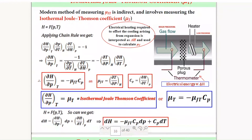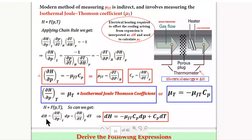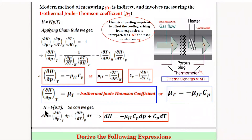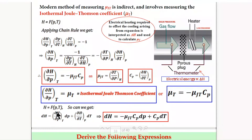We can write the total differential of enthalpy as: dH equals the isothermal Joule-Thompson coefficient times dP plus CP times dT. Substituting mu_T equals minus mu_JT times CP, we get dH equals minus mu_JT times CP times dP plus CP times dT. This is the new equation relating enthalpy changes to pressure and temperature changes.